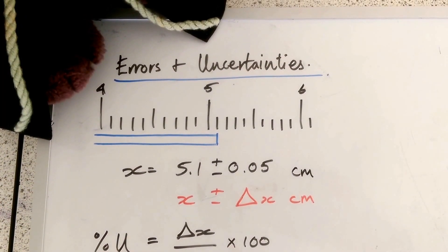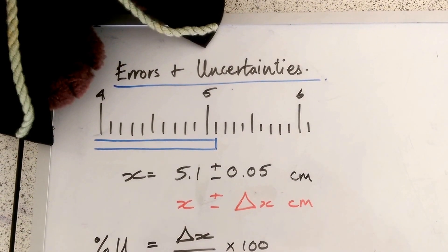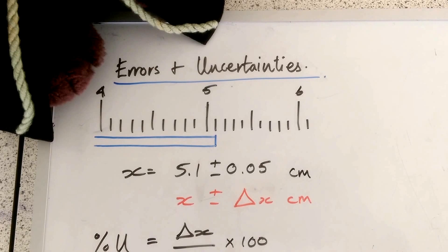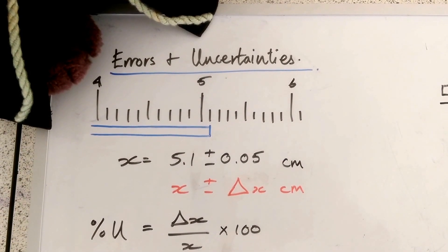Let's imagine we're measuring the length of something, this blue object. We're going to measure its length. You can see it's pretty much 5.1 centimetres. We're going to use the scale divisions to give us our uncertainty.